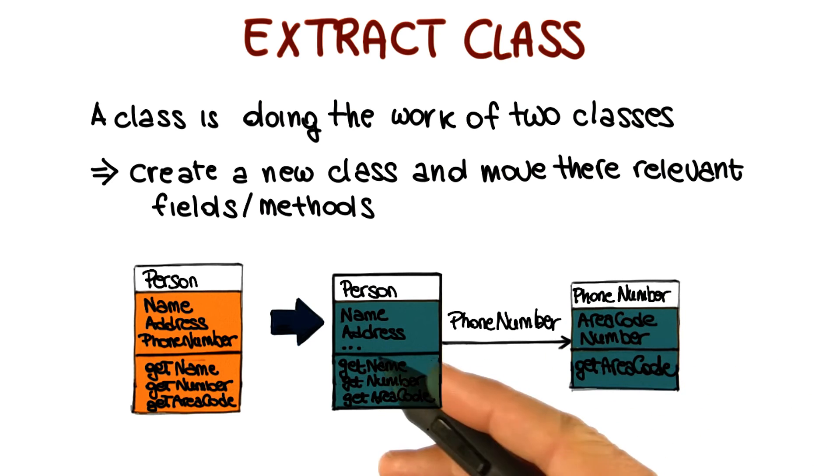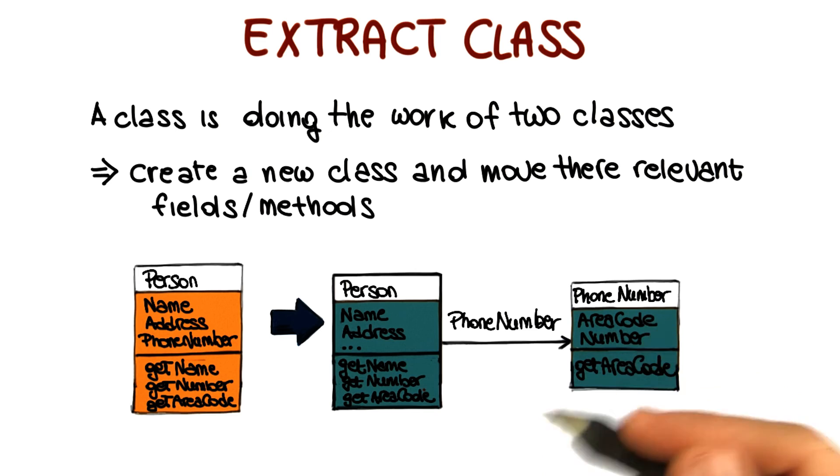And by separating the telephone number behavior into its own class, I once more improve the structure of the code. Because now I have classes that are more cohesive and do exactly one thing.